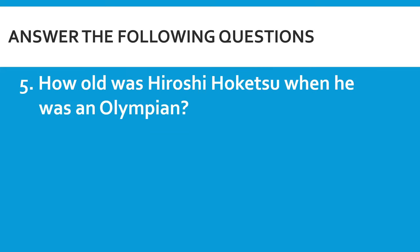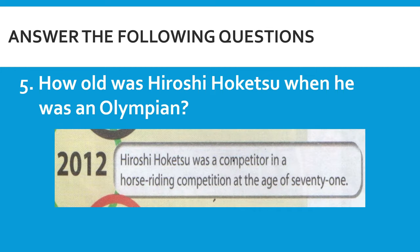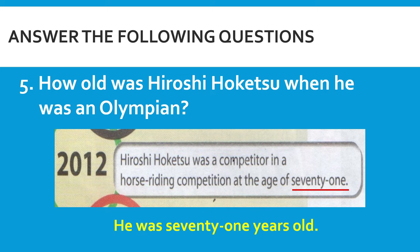Question five: How old was Hiroshi Hokusu when he was an Olympian? Hiroshi Hokusu is very unforgettable in Olympic history because he was the oldest Olympian. In 2012, Hiroshi Hokusu was a competitor in a horse riding competition at the age of 71, so he was 71 years old when he was an Olympian. Did you manage to get all the answers correct, even without complete sentences? If so, congratulations.